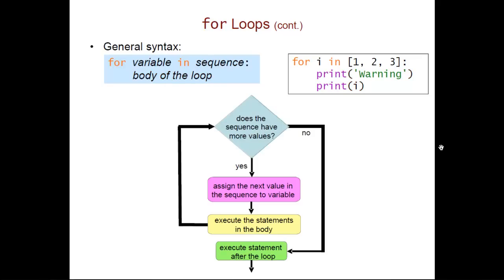And what ends up happening is what you see in this flowchart here. So we repeatedly ask, are there additional things in the sequence that we haven't yet processed? If so, if there's at least one thing in the sequence that hasn't been processed yet, we're going to assign that next value in the sequence to our loop variable. We're then going to execute the statements in the body.